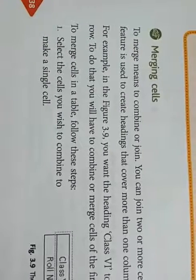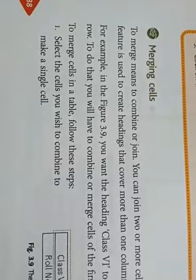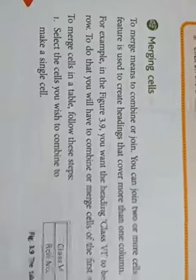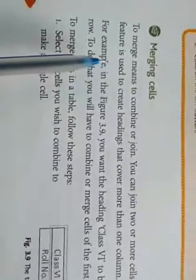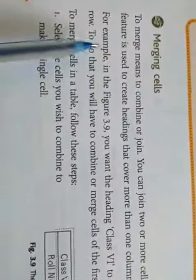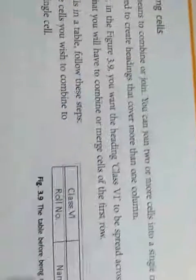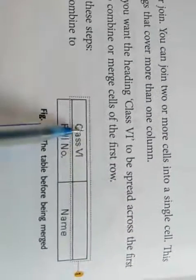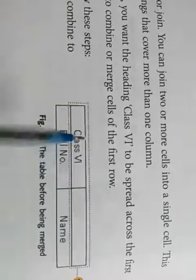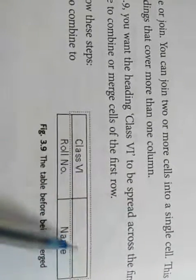Good morning students. Here I am covering the next topic of chapter three: Tables, and the part is merging cells. When we have created a table in our document, we can merge the cells of this table. Let's take an example — suppose this is a table containing two rows and two columns. Horizontal lines are called rows and vertical lines are called columns.